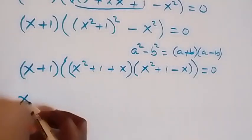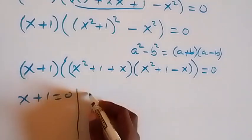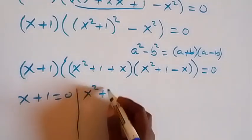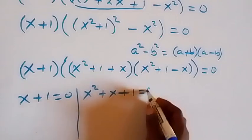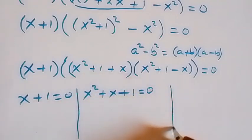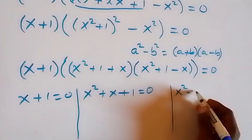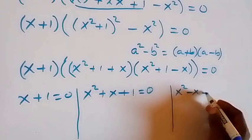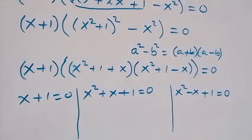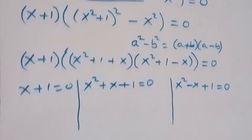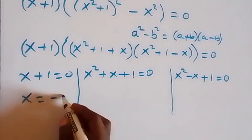From here we have 3 cases. First we have x plus 1 equals to 0, or we have x squared plus x plus 1 equals to 0, or we have x squared minus x plus 1 equals to 0. Let's solve these now. From the first case, x equals to minus 1.